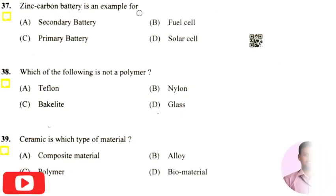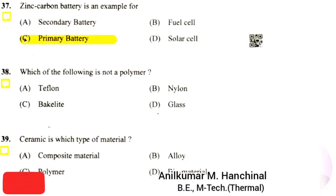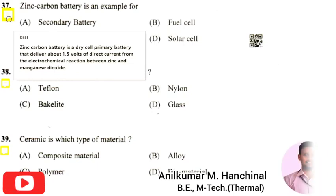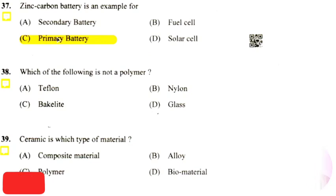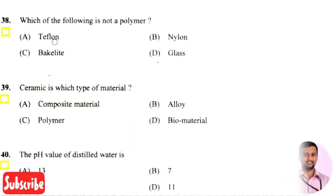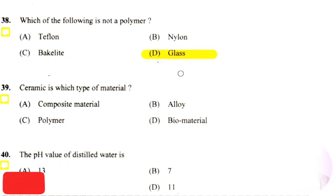The next question is: the zinc carbon battery is an example of — the right answer is option three, that is a primary battery. A zinc carbon battery is a dry cell battery that delivers about 1.5 volts of direct current from the electrochemical reaction between zinc and manganese dioxide. It is a primary battery, meaning once used it cannot be recharged.